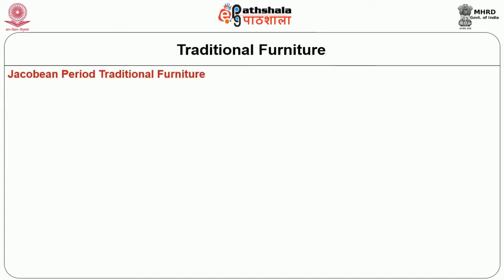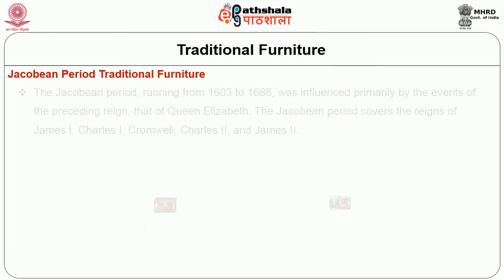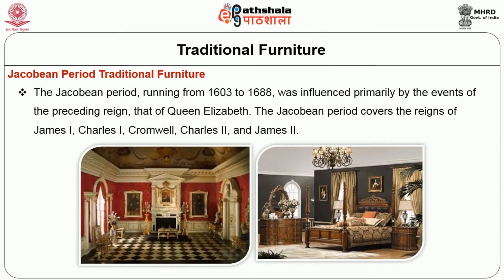The first style is the Jacobean period, or traditional furniture. The Jacobean period, running from 1603 to 1688, was influenced primarily by the events of the preceding reign — that of Queen Elizabeth. The Jacobean period covers the reigns of James I, Charles I, Cromwell, Charles II, and James II.